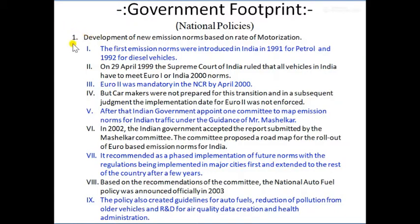The first footprint by government is the development of emission norms based on the rate of motorization. Based on motorization, they forecast future emission levels. The government calculates a future rate of motorization - what will be the automobile population on Indian roads after 10 or 15 years - and on that basis calculates what the pollution level in India would be if new norms are not developed or modified.